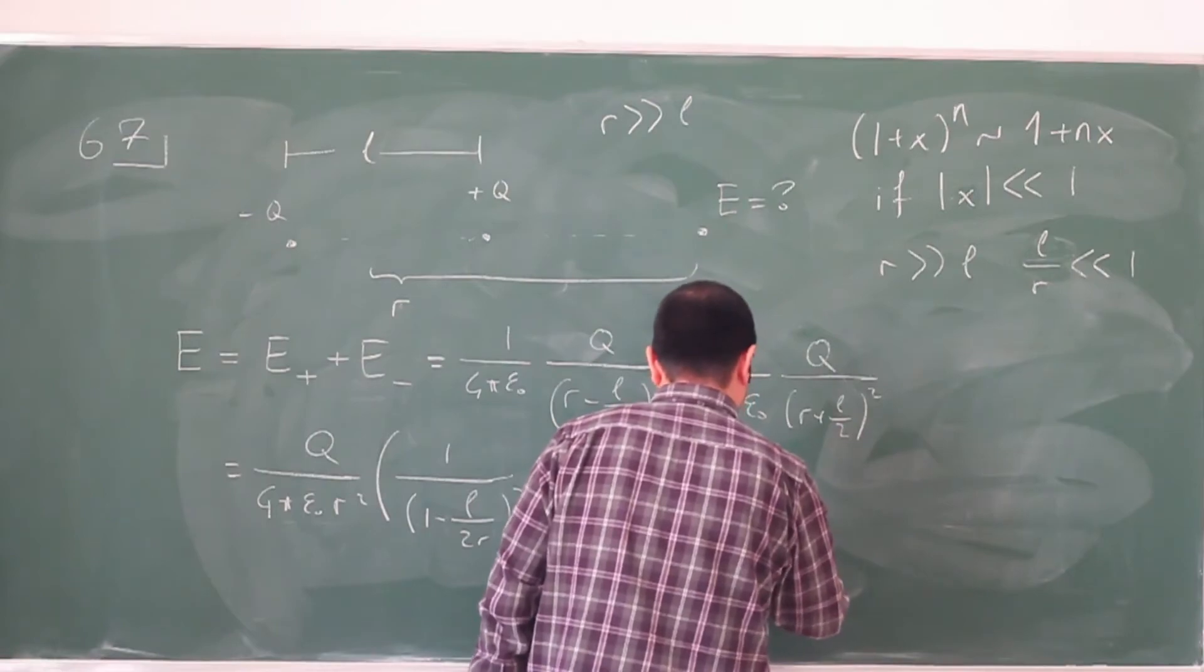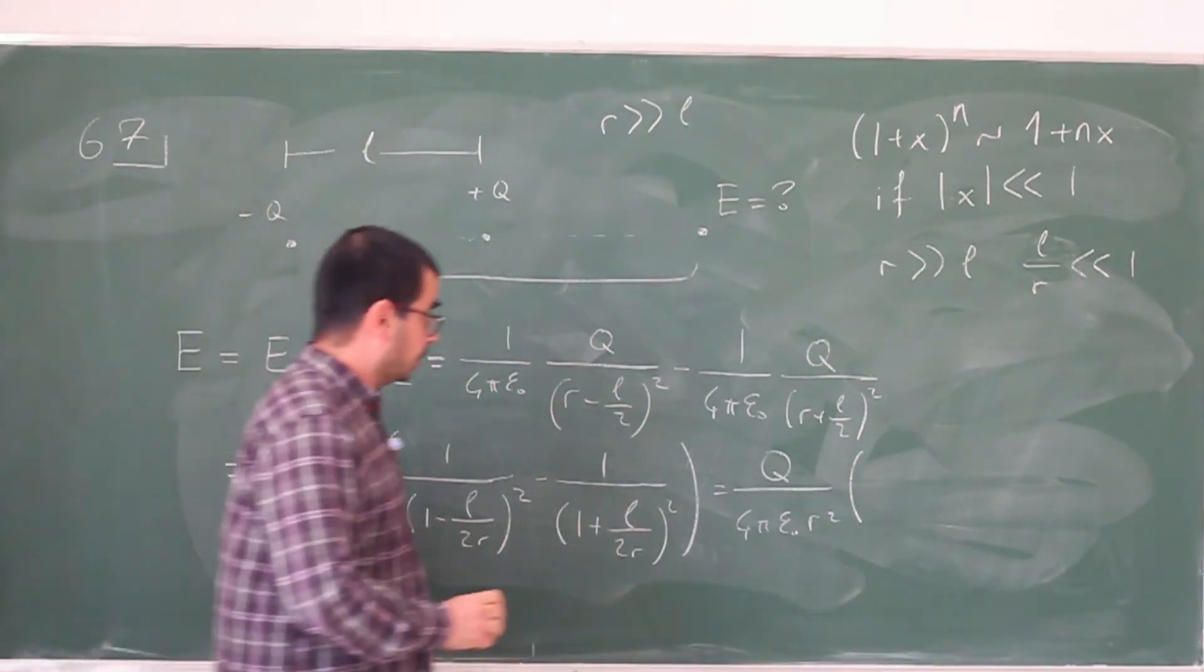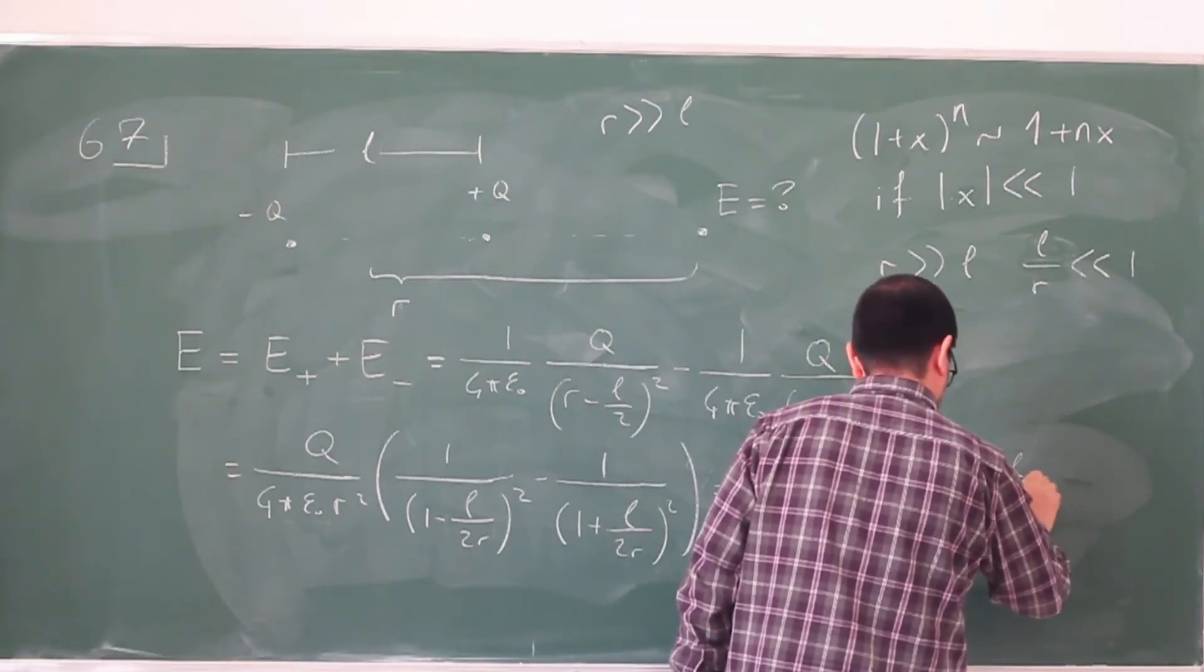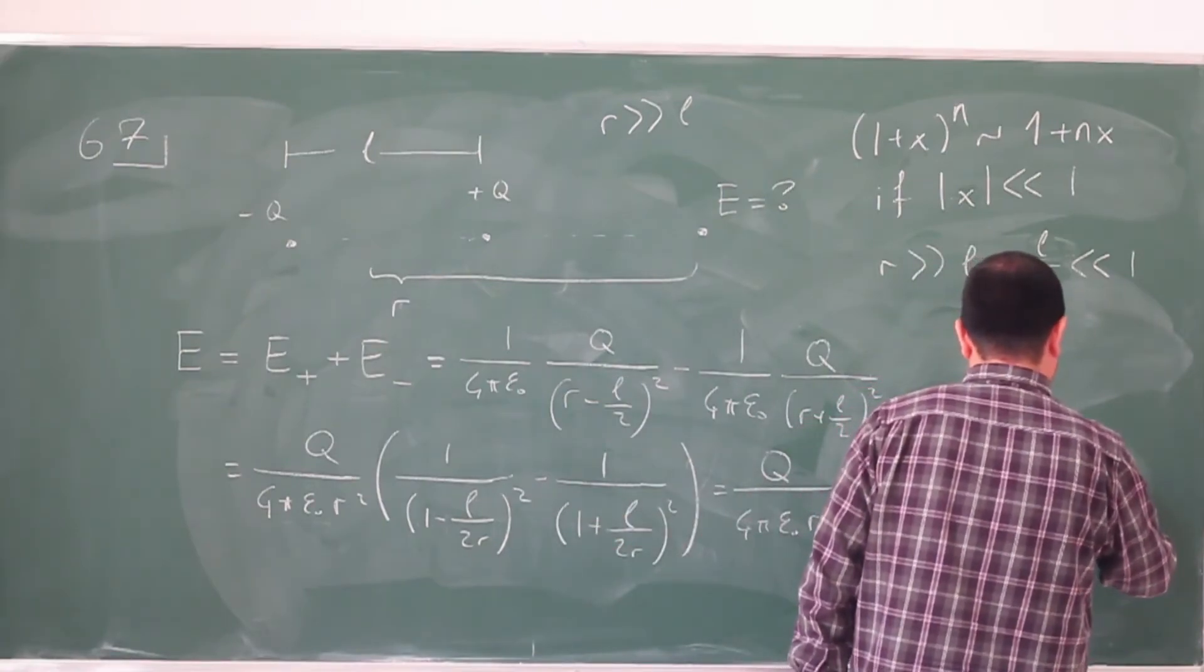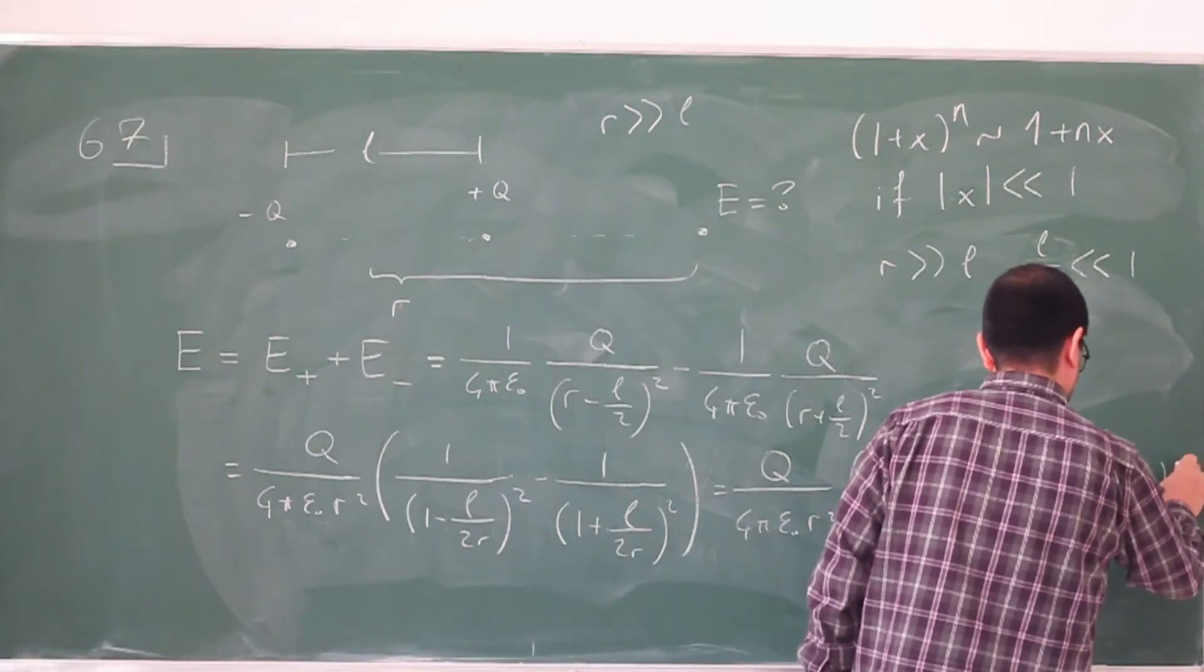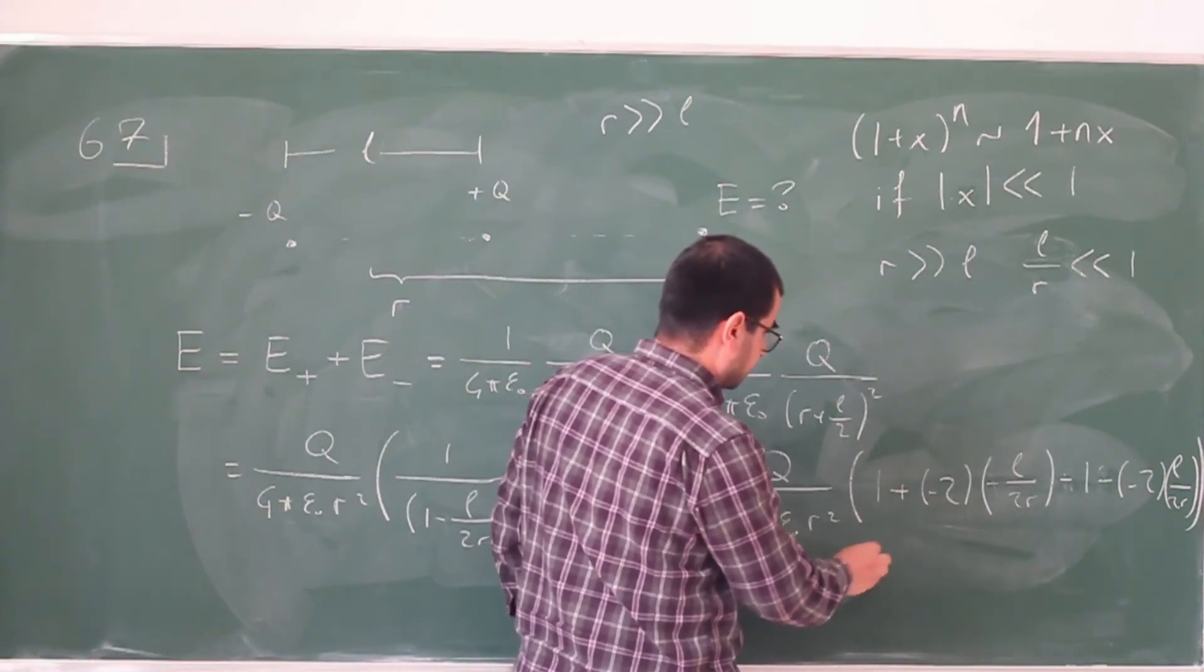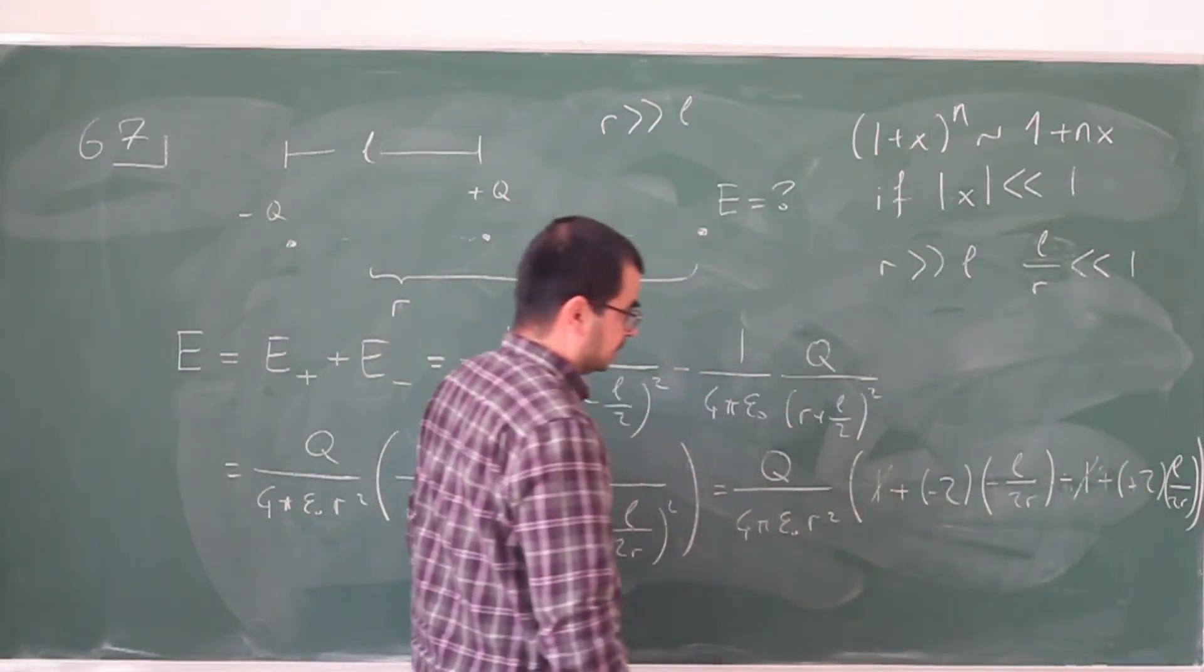So this is q over 4π epsilon naught r squared. If I binomial expand this one, this is going to be 1 plus, so n is minus 2. Let's just write this explicitly. And x is minus L over 2r, minus 1 plus, or again minus because of this minus sign, minus 2 L over 2r. So this becomes plus, this gets cancelled by this one, and this also becomes plus.